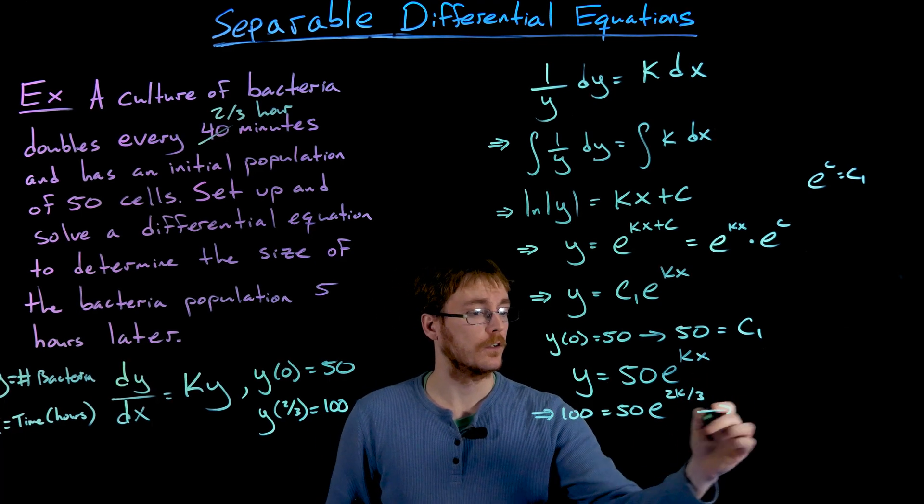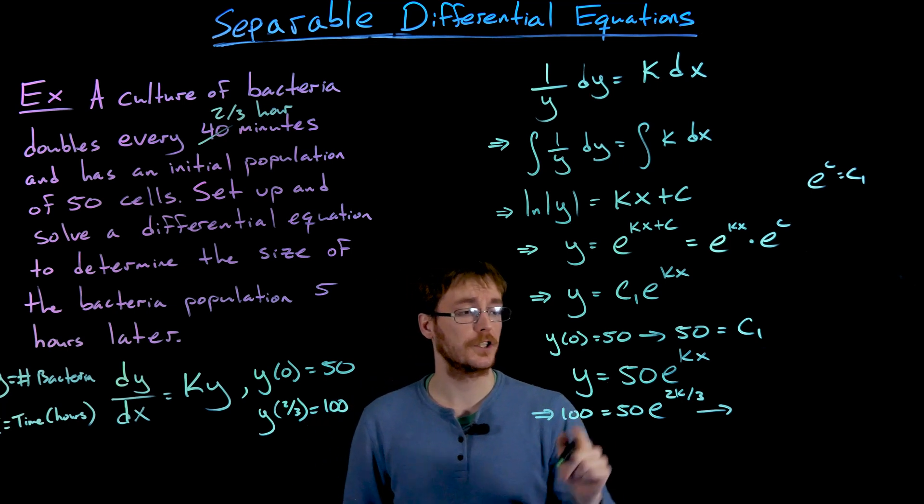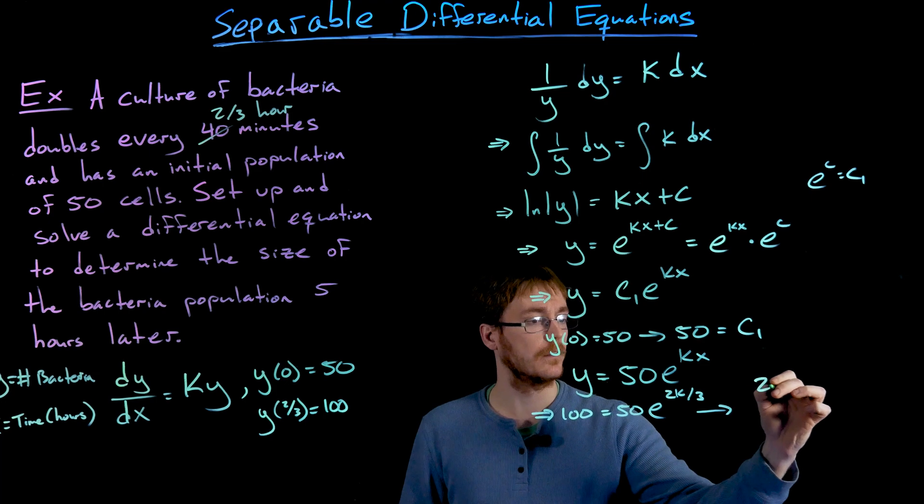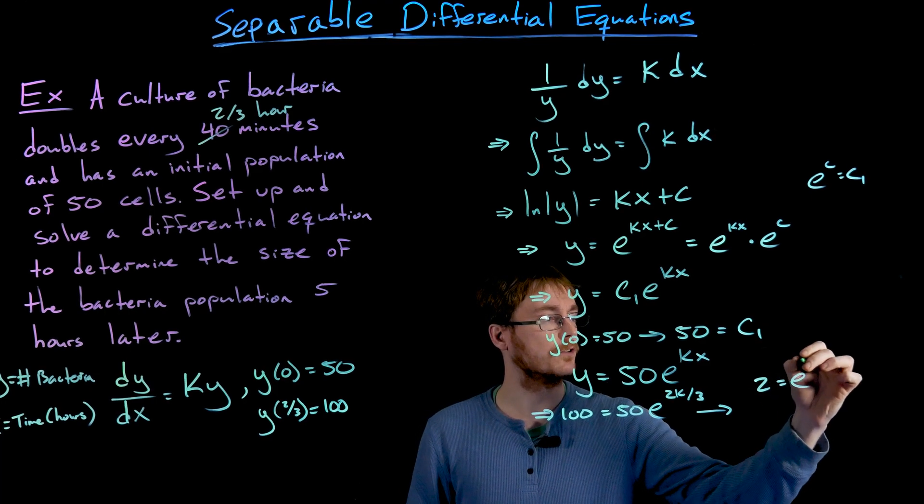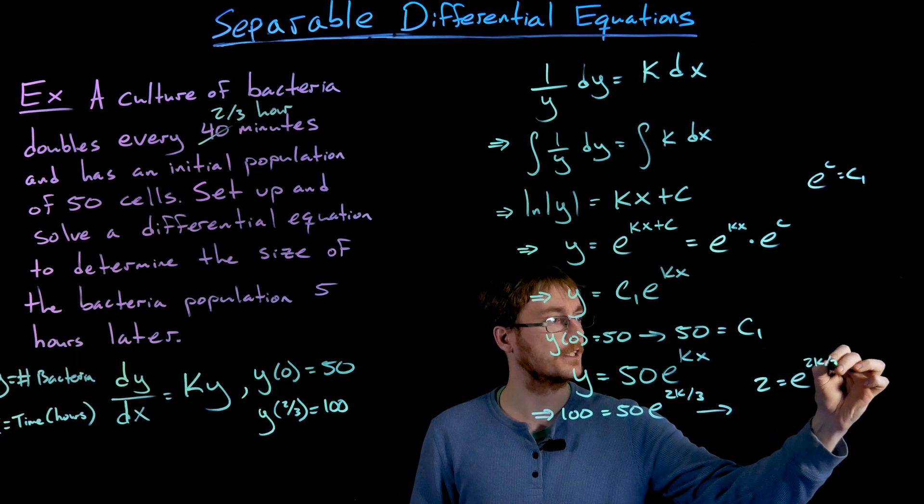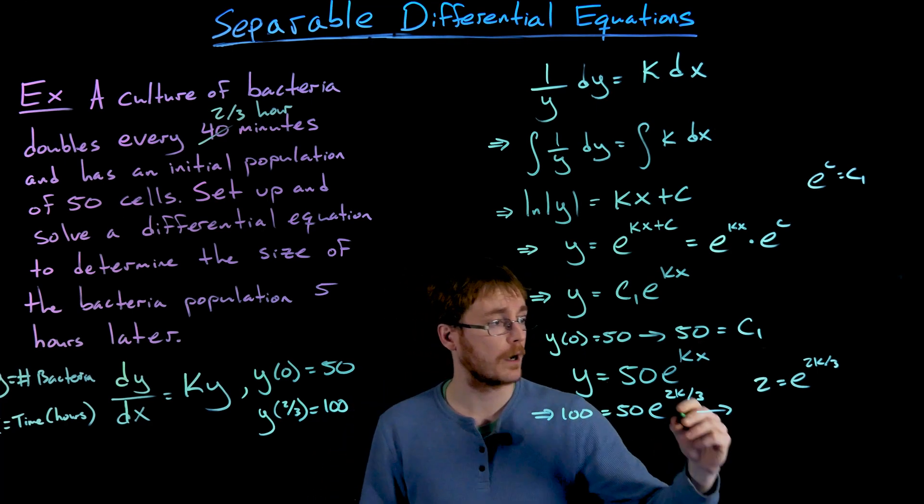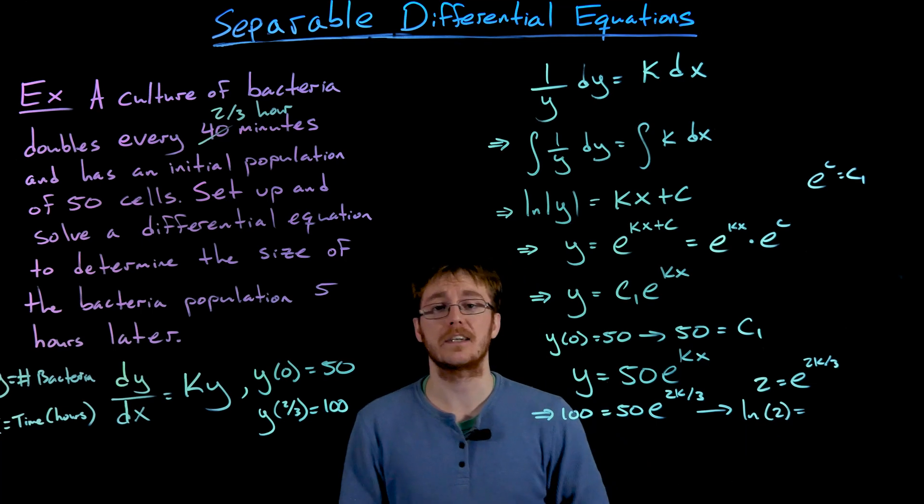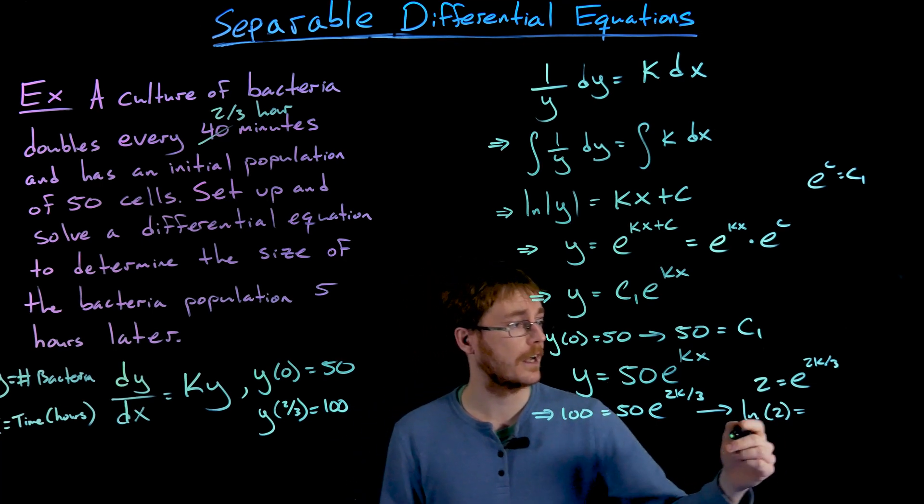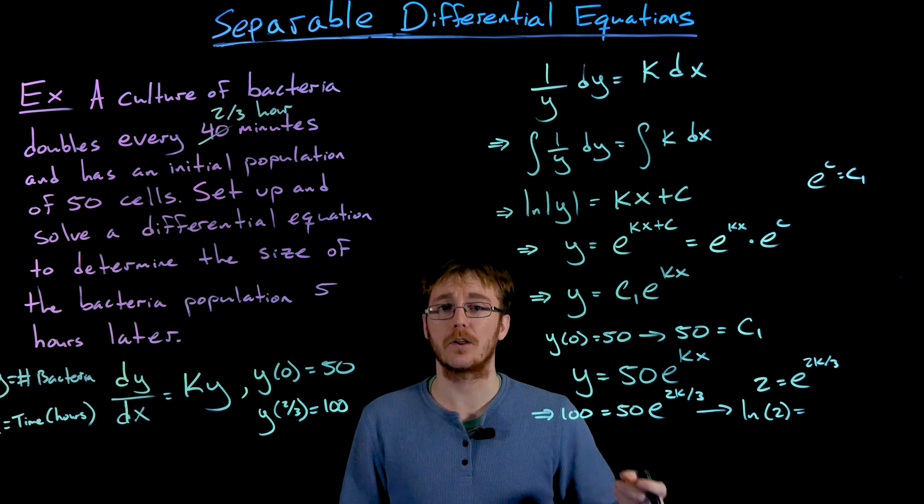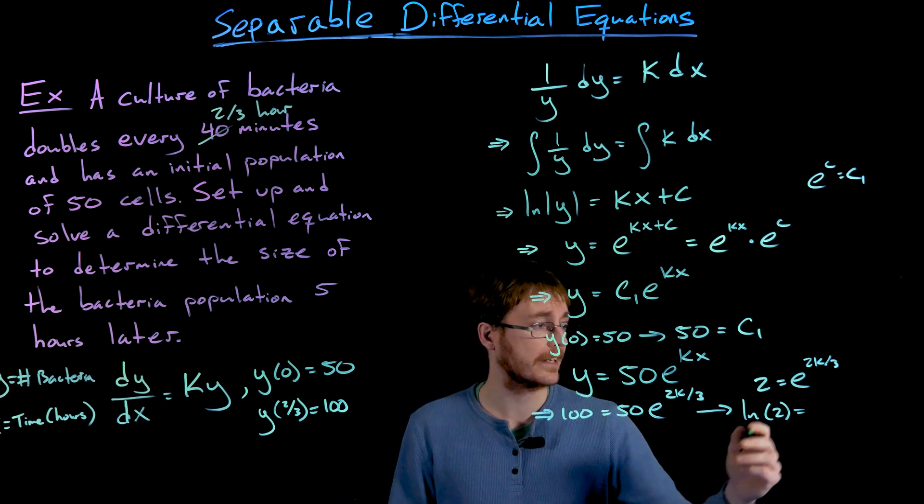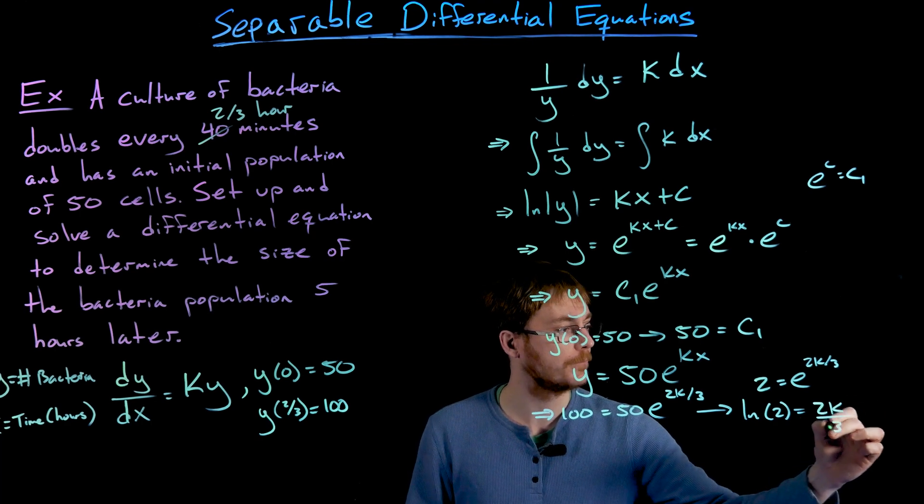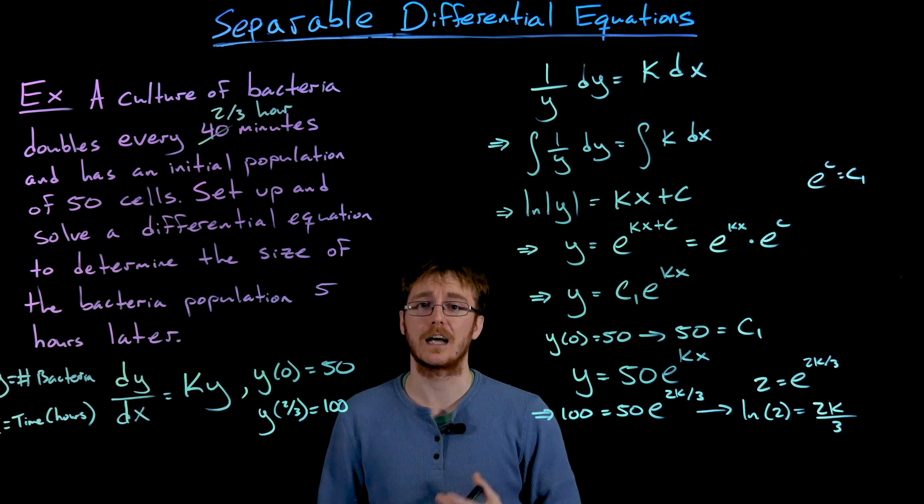And so now we need to solve this exponential equation for k. The first step towards doing so is to divide both sides by 50. So that gives us 2 is equal to e to the 2k over 3. Then we take the natural log of each side to drop that base. Taking the natural log of each side gives us the natural log of 2 on the left-hand side and the composition of the natural log of the natural exponential on the right-hand side. But that special composition cancels out, leaving us just the exponent of 2 thirds times k.